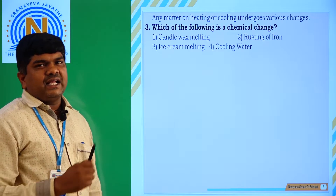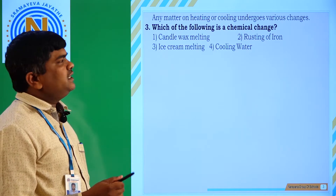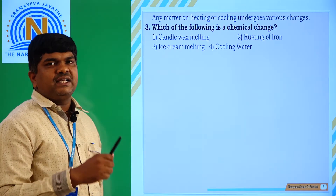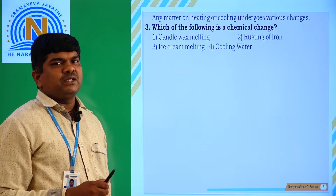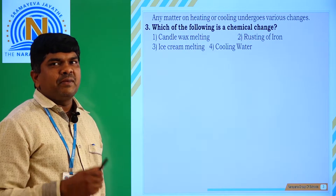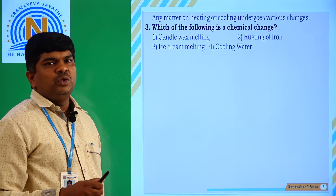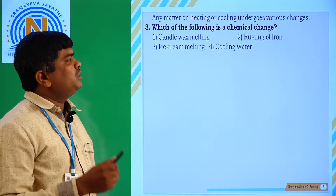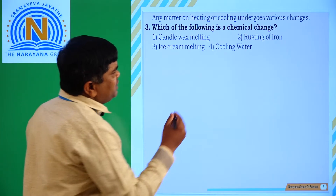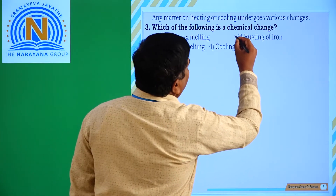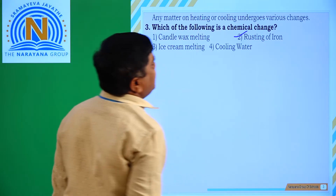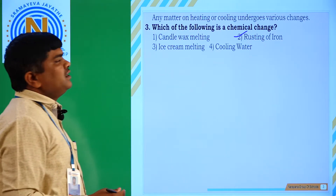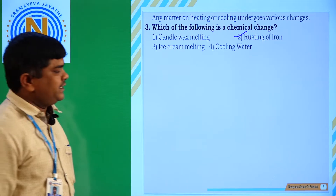The key difference here is between physical change and chemical change. In a physical change, no new substance is formed. In a chemical change, new substances are formed. Here, rusting of iron forms a new substance, so rusting of iron is a chemical change. Option 2 is correct.